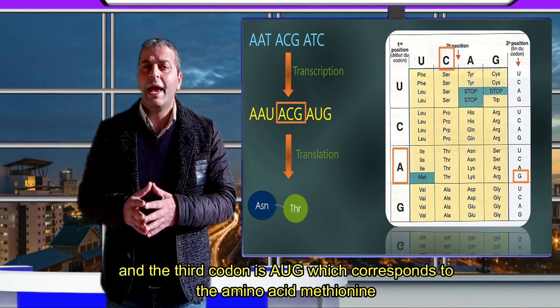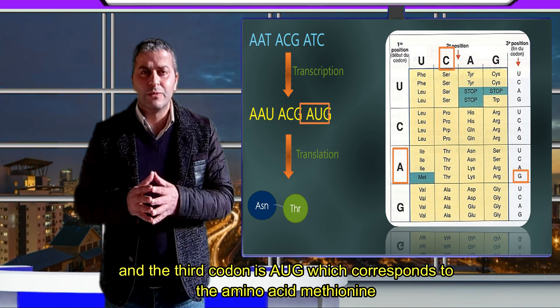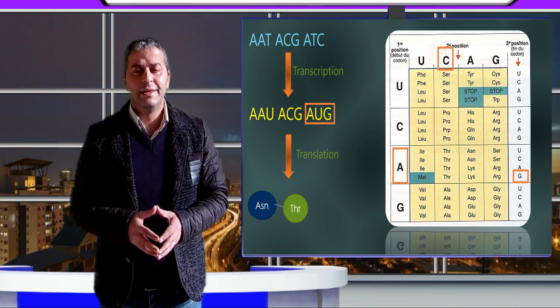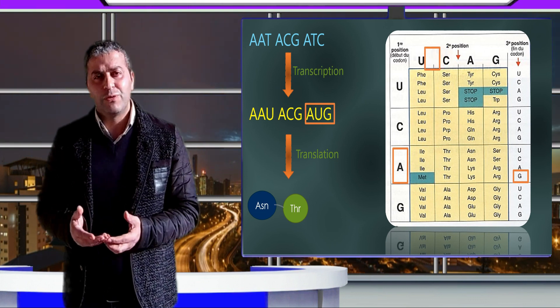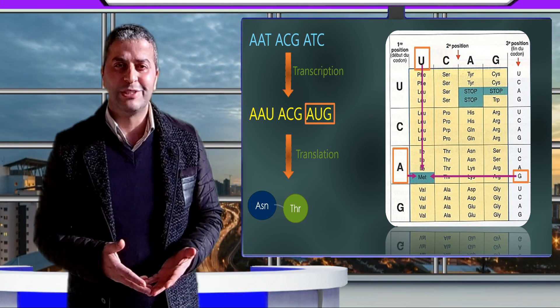The third codon is AUG which corresponds to the amino acid methionine. Thanks for watching, see you in the next video, In Sha Allah.